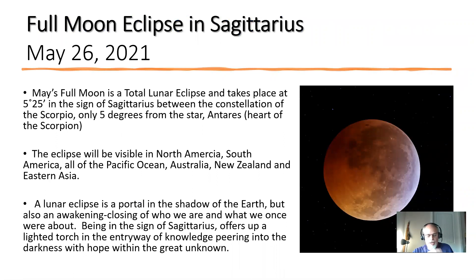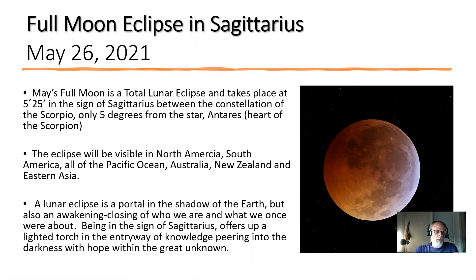This full moon total lunar eclipse takes place at five degrees, 25 minutes in the sign of Sagittarius. It should actually be in the constellation of the Scorpion — only five degrees from the star Antares, which is the heart of the scorpion. It's actually between the claws and head of the scorpion and the heart of the scorpion. I'll show a night sky map of what it looks like when you're out there actually visibly seeing the lunar eclipse.